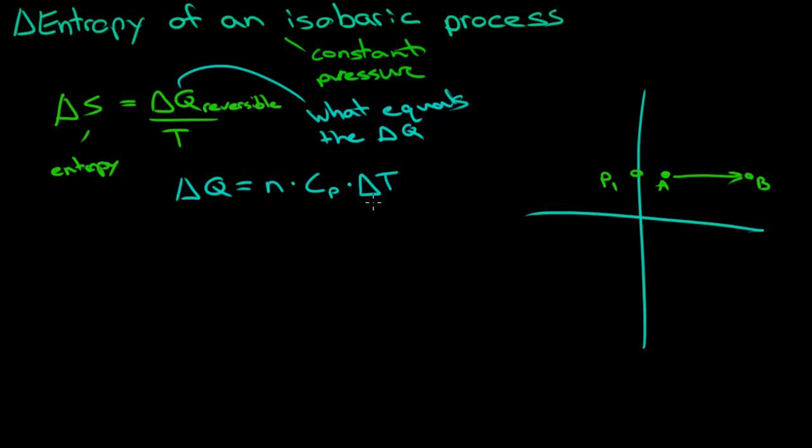Now, if we wanted to take the derivative of this, because these are constants, it's just a constant times the derivative. We get dQ equals n times Cp times dT.